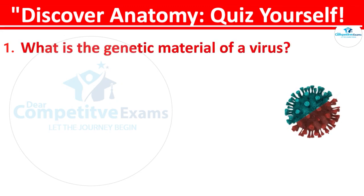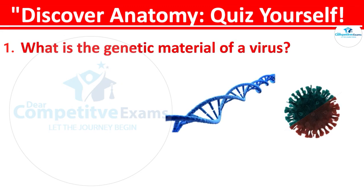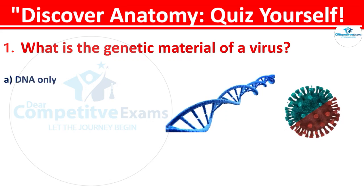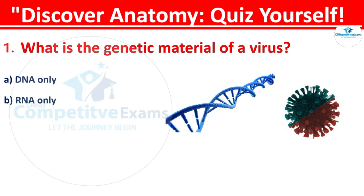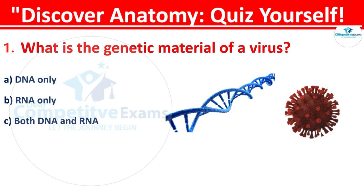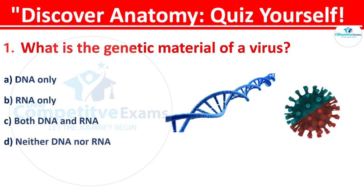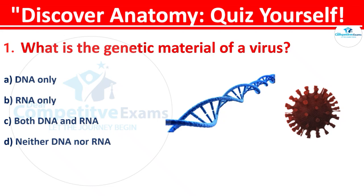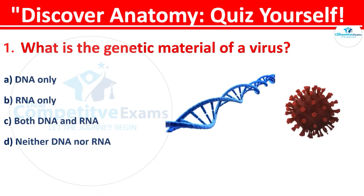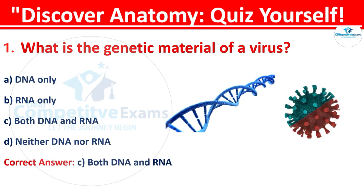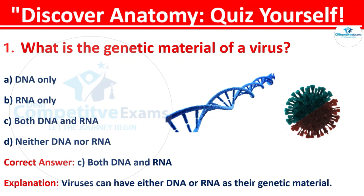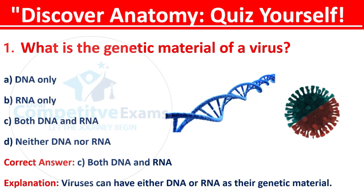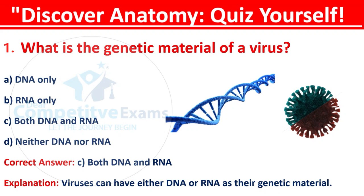Question 1: What is the genetic material of a virus? Your options are: DNA only, RNA only, both DNA and RNA, or neither DNA nor RNA. The correct answer is C, that is both DNA and RNA. Viruses can have either DNA or RNA as their genetic material.